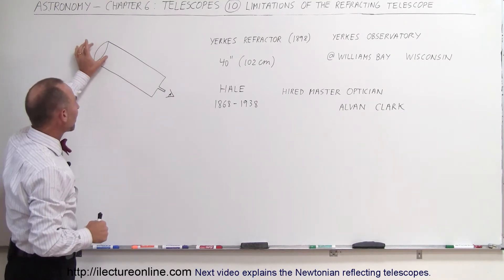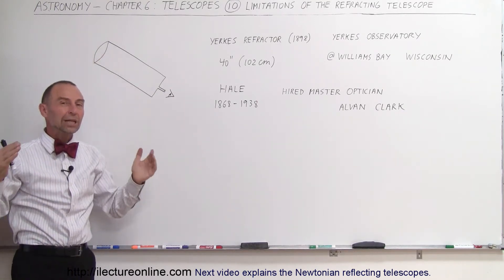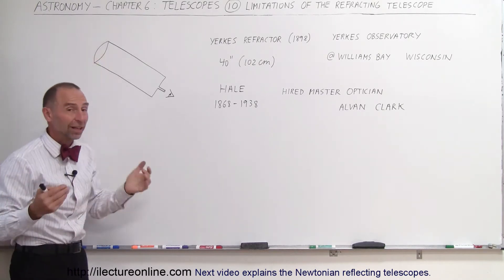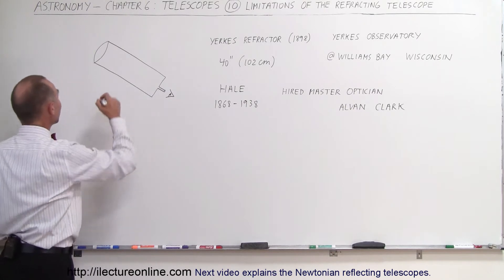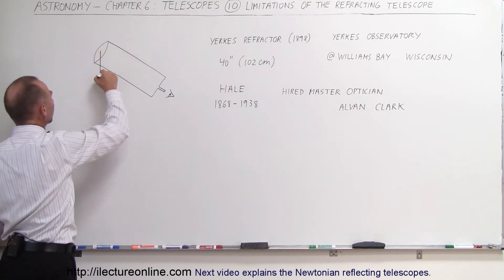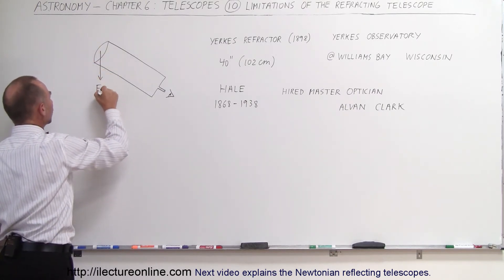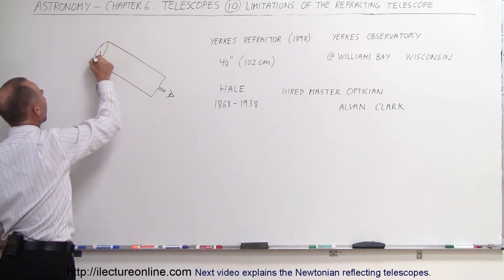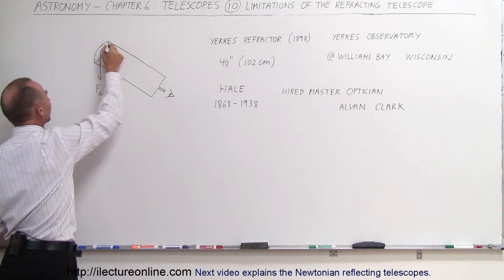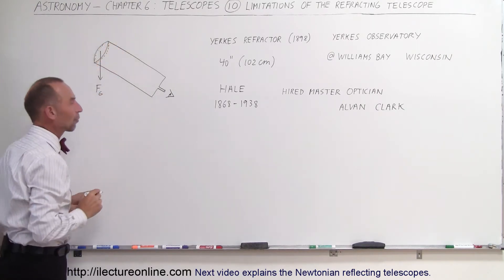The problem with a refracting telescope is when you start to build them really large, you end up with a very large lens and very large lenses become very big and very heavy and they have to deal with gravity. Gravity pulls down on them, so that's the force due to gravity, and because of that the lens could actually bend or reshape itself simply under the forces of gravity.